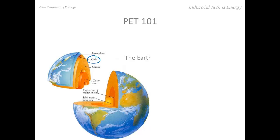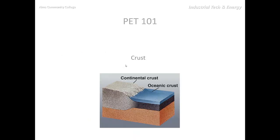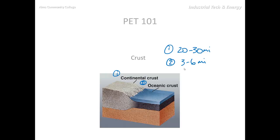It's this crust that we will spend most of our time with this semester. You can see here that we've got two types of crust: the continental crust and the oceanic crust. The continental crust is about 20 to 30 miles thick and the oceanic crust is anywhere from three to six miles thick.